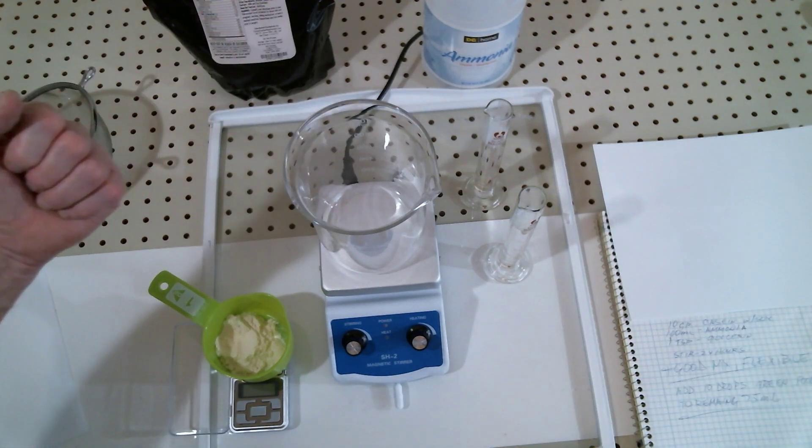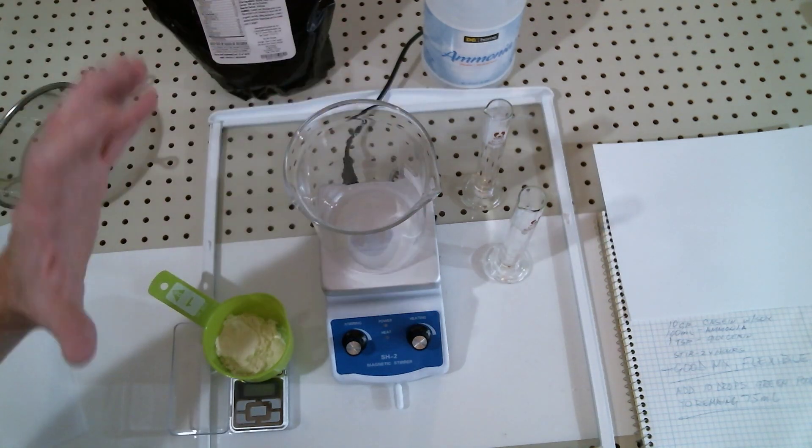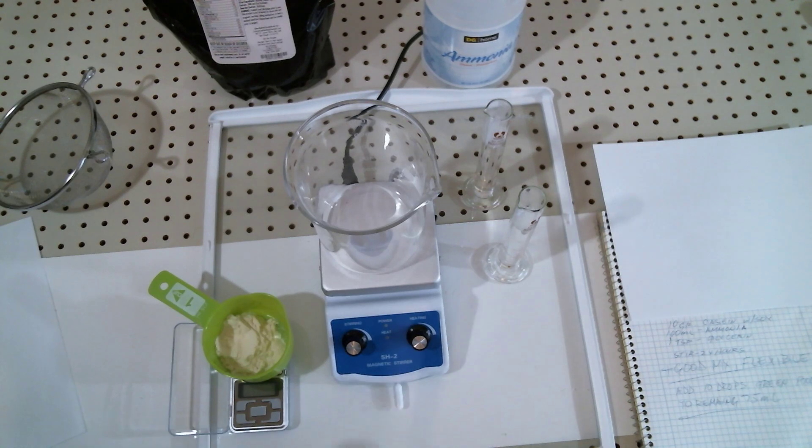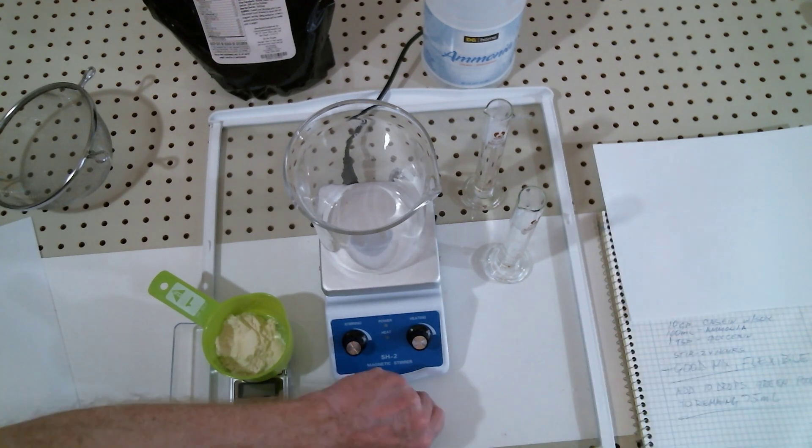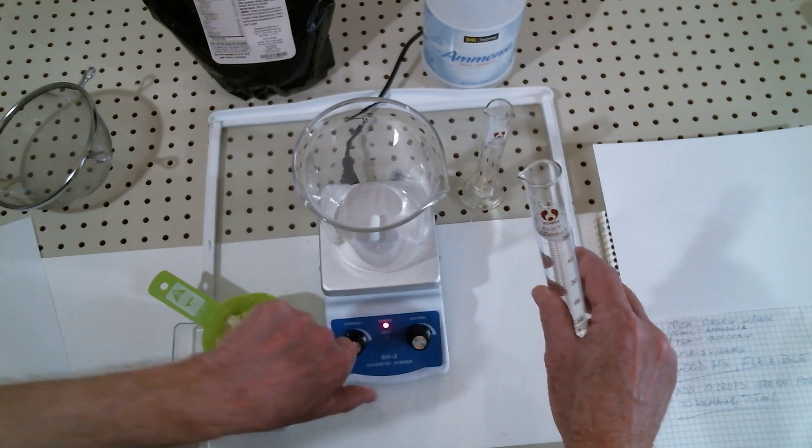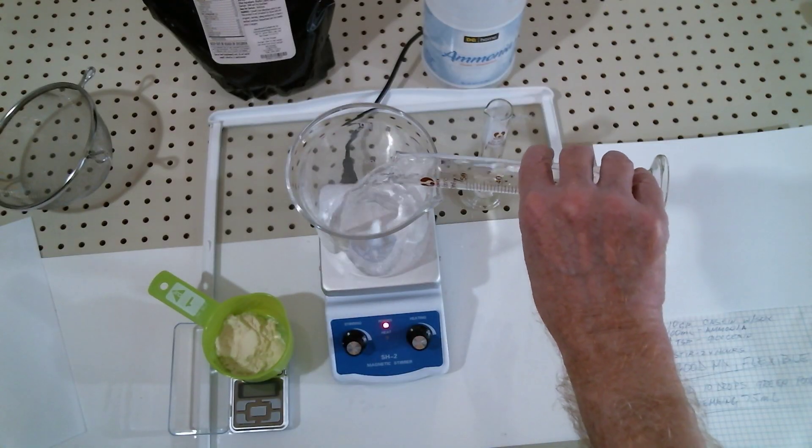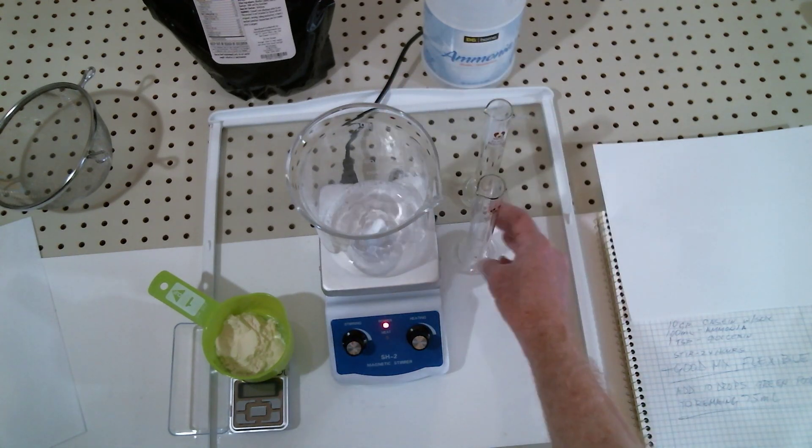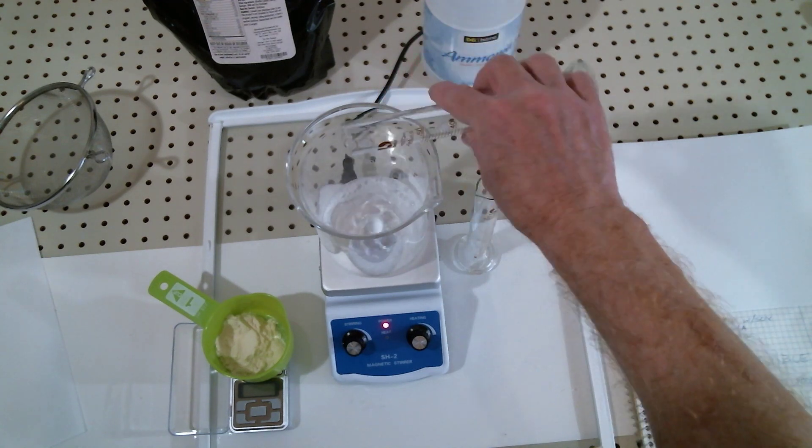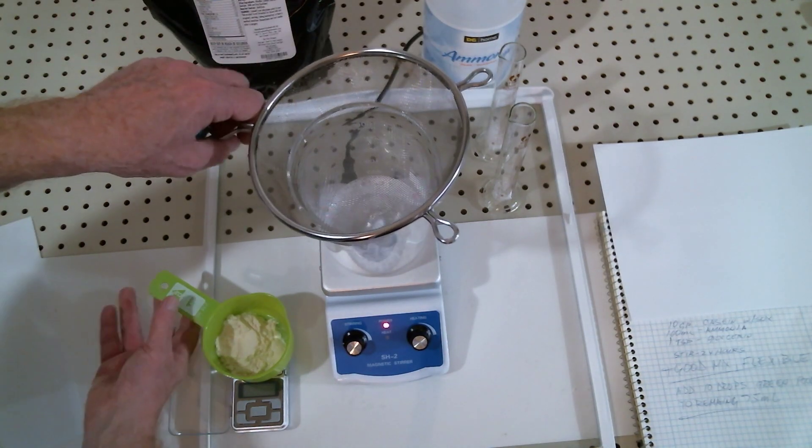To make it more flexible we could add glycerin, but we don't need it. After we make this base formula, you can begin adding different colors. Put the stir bar in first, get it stirring, and add the powder very slowly. Put in the ammonia first - there's 50 and another 50 makes 100.